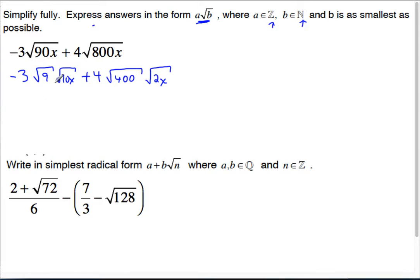Now we can simplify. Negative 3, the square root of 9 is 3, times the square root of 10x. There's nothing else we can do. Then we're adding 4, the square root of 400 is 20, and then we have the root of 2x.